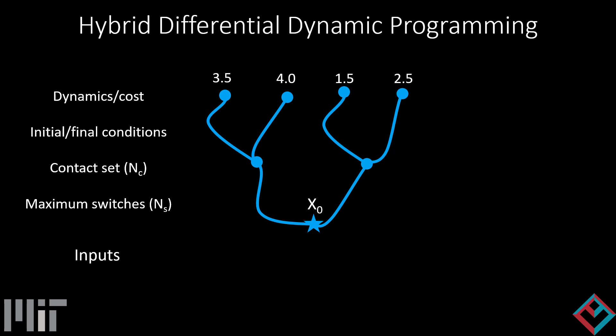This is shown here for a primitive with two valid contacts and one hybrid switch. Fix the mode sequence to that of the lowest cost branch and then optimize the continuous motion variables. Our algorithm returns a locally optimal mode sequence, a nominal state and input trajectory, and a time-varying linear feedback controller.